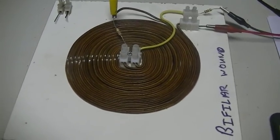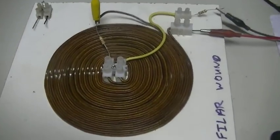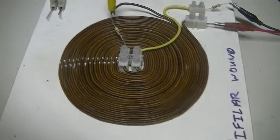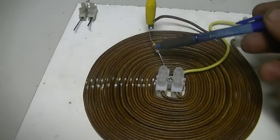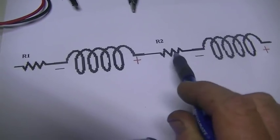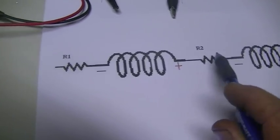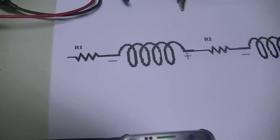Alrighty, this is our second test with our bi-filler pancake coil after our little discovery. That discovery being that the current flowing through the resistor R2 here is higher than the current flowing into the coil as a whole.